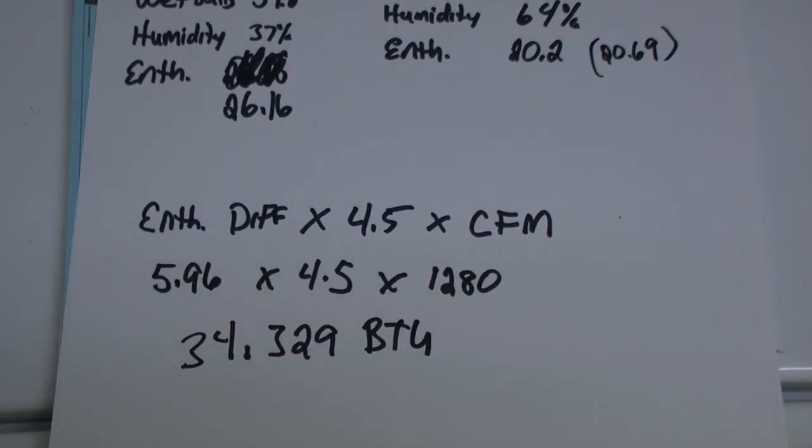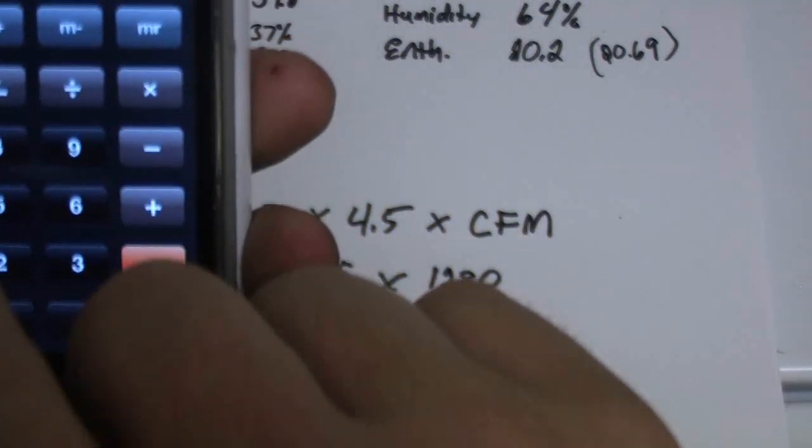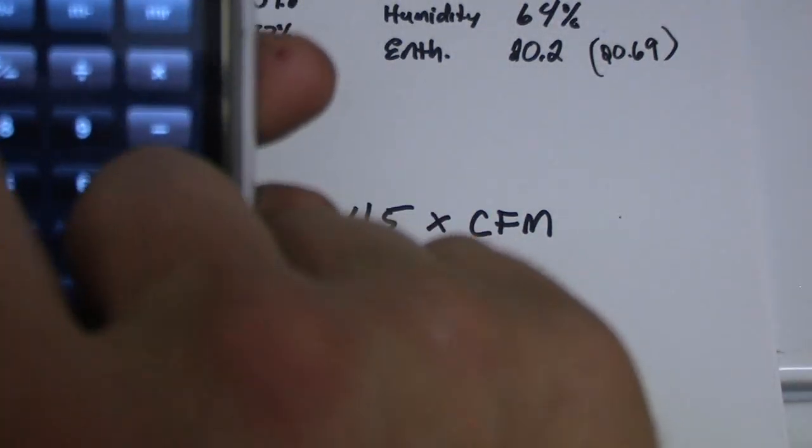So I measured one today that my enthalpy difference was about the same, like 5.49, 5.5. But my CFM was 1,700, 725. I think that's what it was. Let's clear this out. Let me show you what happens if the CFM is too high.